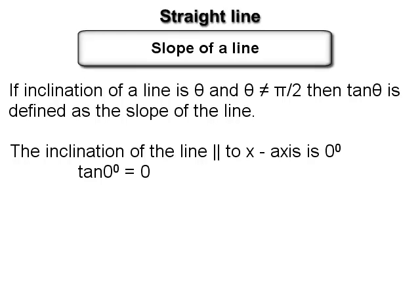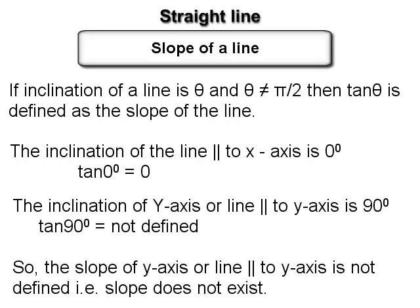Since tan 0° = 0, the slope of the x-axis or any line parallel to the x-axis is 0. The inclination of the y-axis or a line parallel to the y-axis is 90°. Since tan 90° is not defined, the slope of the y-axis or a line parallel to the y-axis is not defined — that is, the slope does not exist.